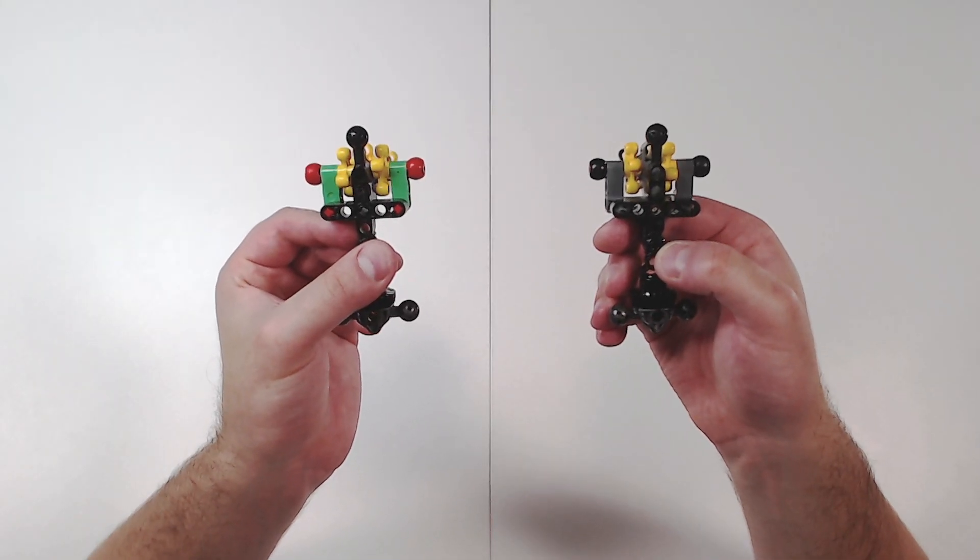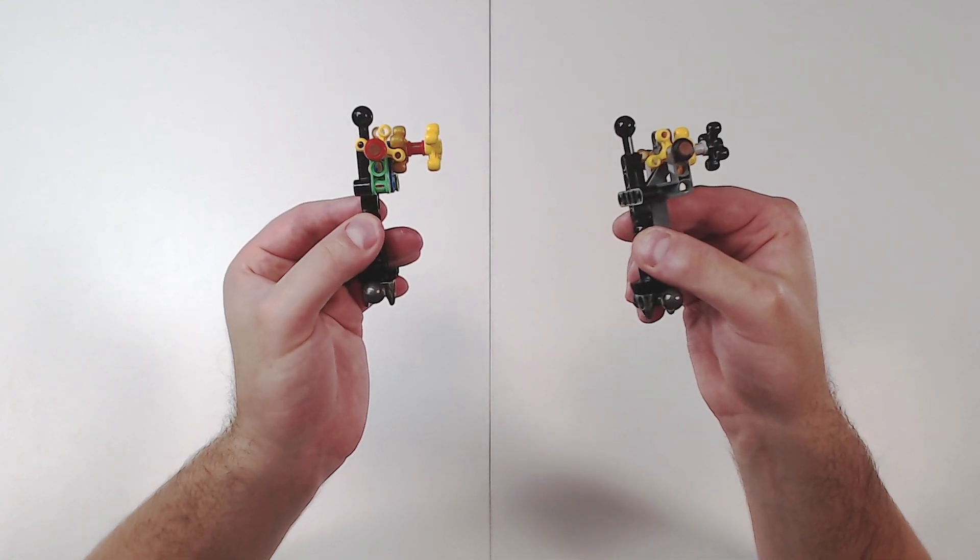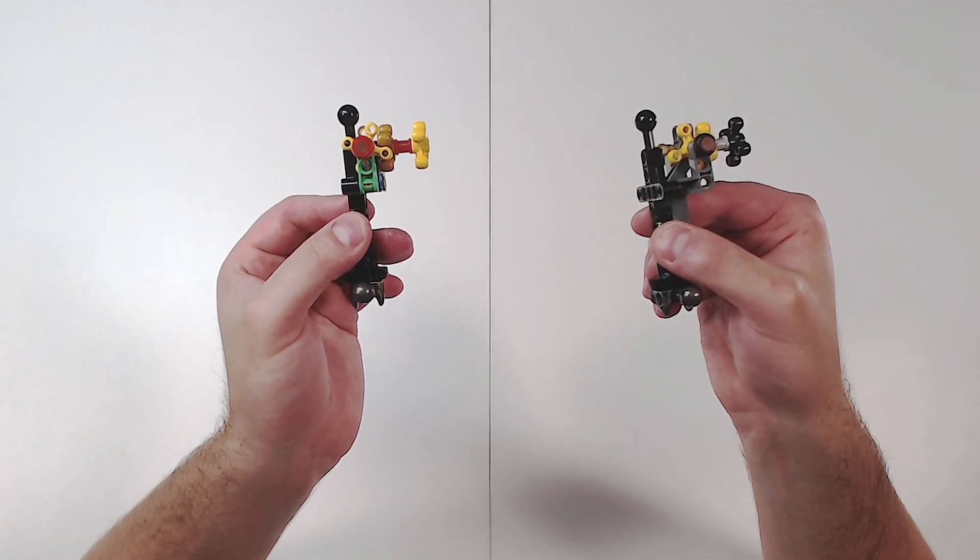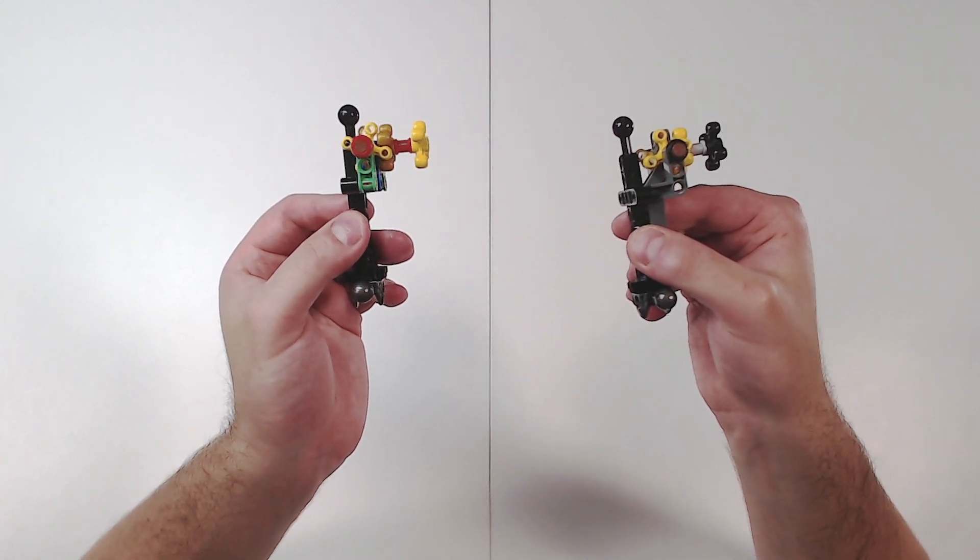While both builds look virtually identical from the front, the real magic comes when viewing them from the side. As you can see, our custom build pulls the shoulder joints forward one stud length, creating a stature much more in line with human anatomy.